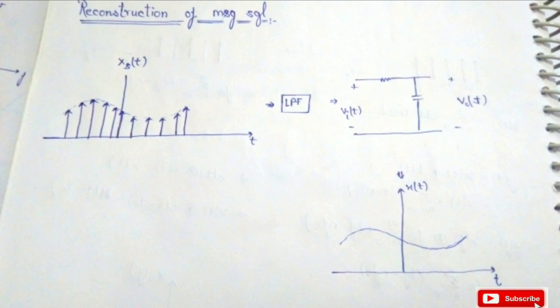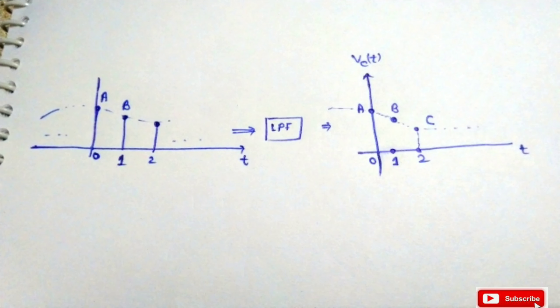To reconstruct the signal, we pass our sampled signal x(t) through a low-pass filter. A low-pass filter is a combination of resistance and capacitor in which the sampled signal is applied as input and the output is noticed across the capacitor. The capacitor charges according to the sampled value, and finally we assemble all the capacitor voltages to reconstruct our message signal x(t).